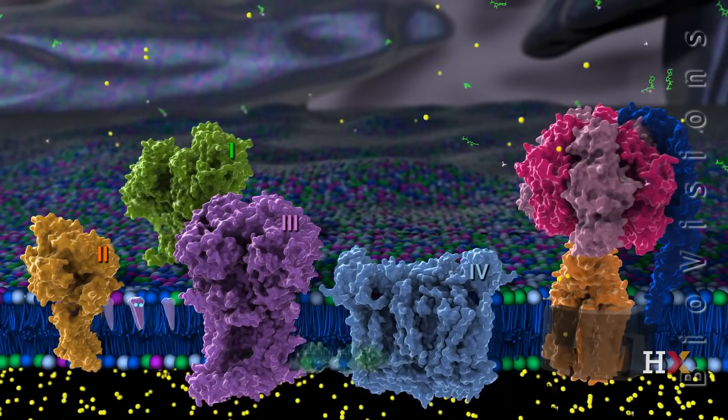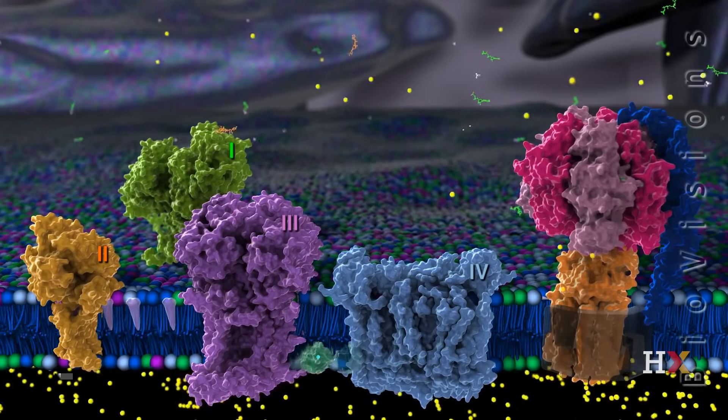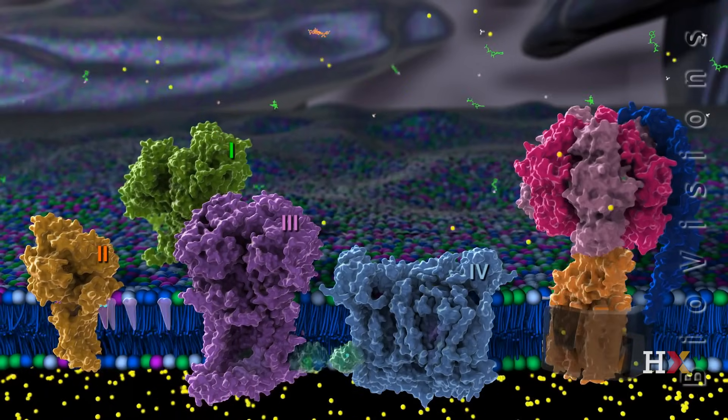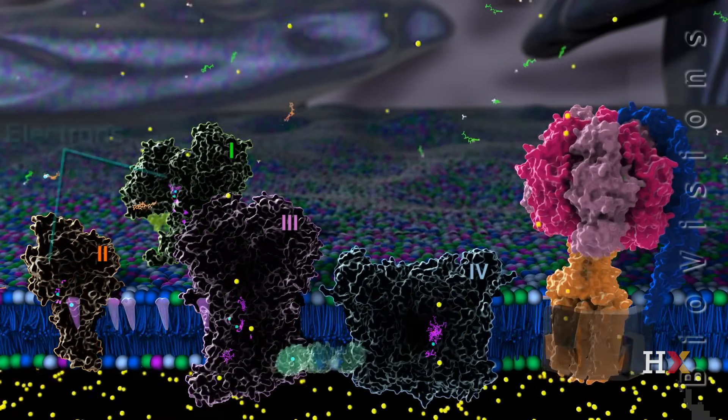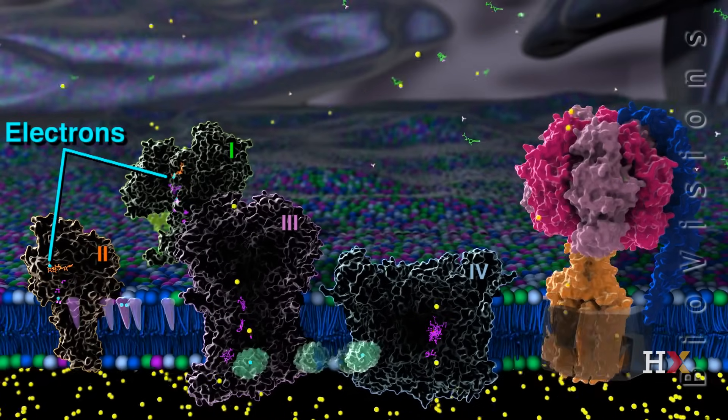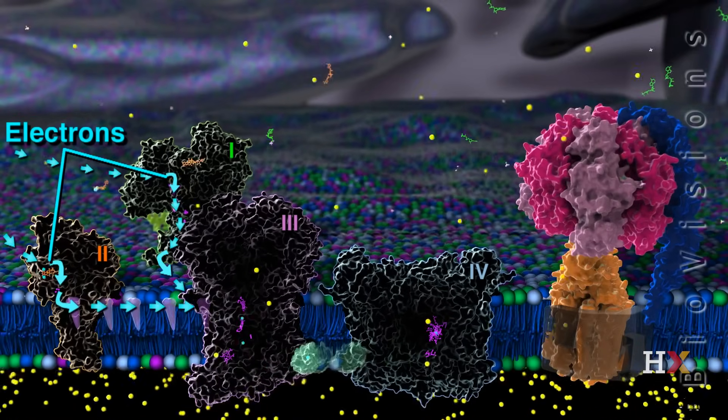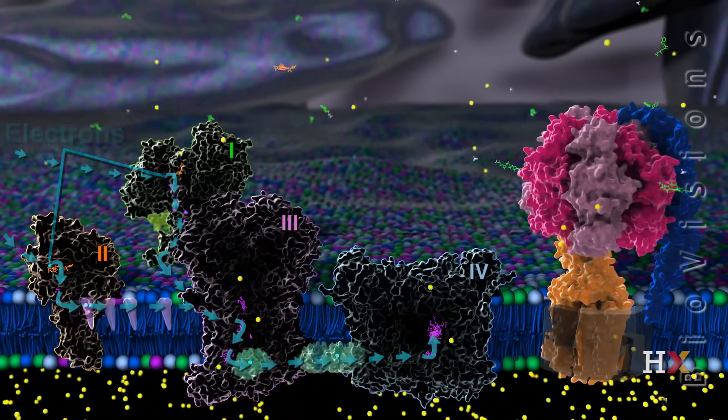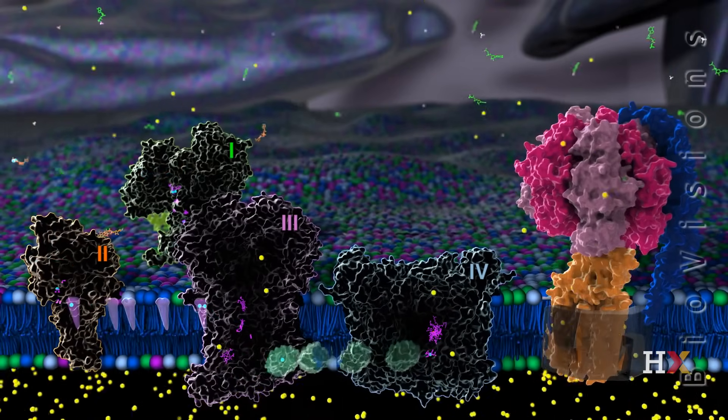Proton pumping requires energy, and the four protein complexes get this energy by transferring electrons through a series of coupled reactions. This linked process of electron transport is why the four complexes are collectively referred to as the electron transport chain.